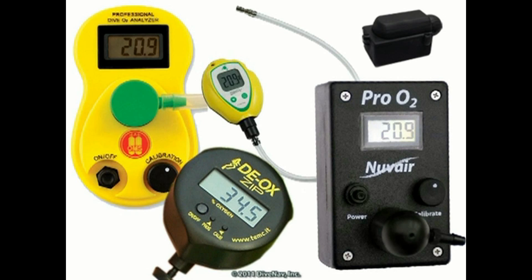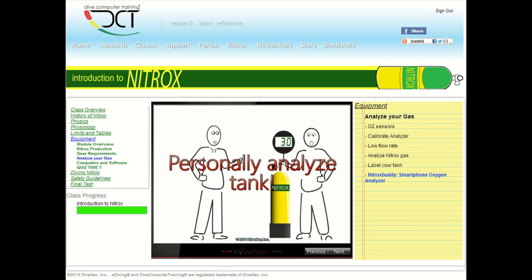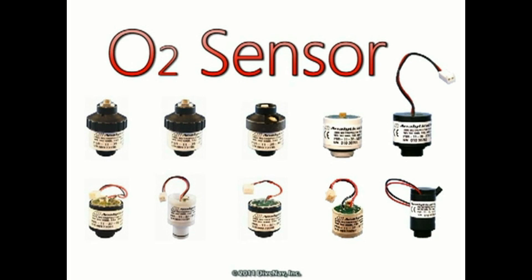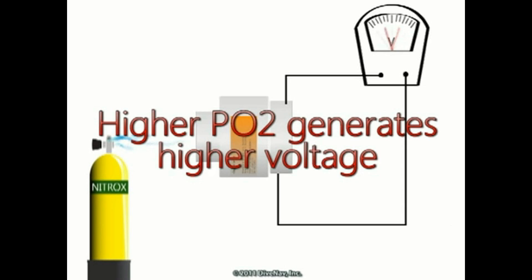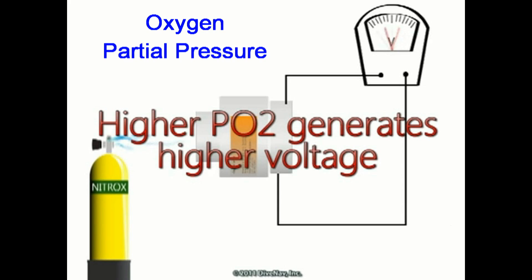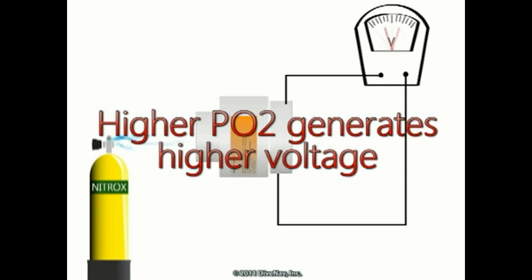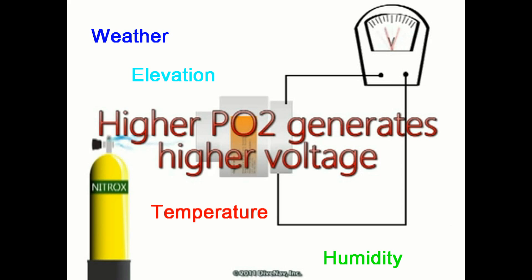On the other hand, an oxygen analyzer is affected by several environmental variables. At the heart of every oxygen analyzer there is an oxygen sensor. The oxygen sensor is a chemical device that measures the partial pressure of oxygen, and as such it is affected by changes in atmospheric pressure, temperature, and humidity.